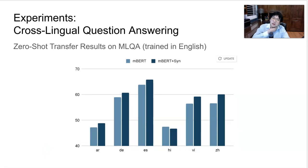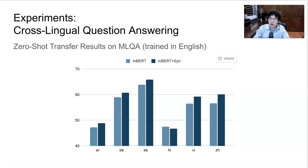Next, here are the results for cross-lingual question answering on the MLQA dataset. Again, we train the model on English questions, context passages, and answers, then test whether the model can answer questions in another six languages. We show that in five out of these six languages, multilingual BERT augmented with syntax information statistically significantly outperforms the baseline multilingual BERT.